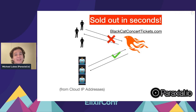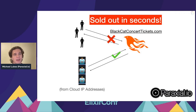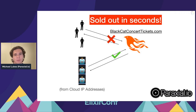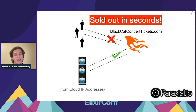Here's a diagram of what's happening. There are bots coming from IP addresses of rented cloud servers. If you're the bad guy, you're renting a cloud server or using the free tier, putting your code — which could be a Python script or a Selenium/Puppeteer thing — and going to Black Cat Concert Tickets, monitoring it, and buying all the tickets before real people can. That is horrible.